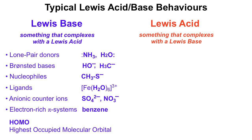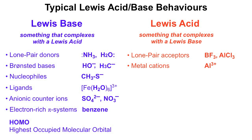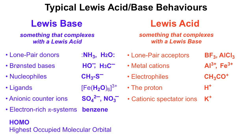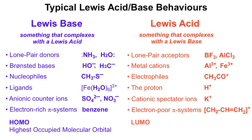Lewis acids can behave in various ways: as lone pair acceptors, for example boron trifluoride and aluminium chloride. Metal cations, for example the Al³⁺ ion and the Fe³⁺ ion. Electrophiles, for example the acyl cation, which reacts with benzene in the Friedel-Crafts reaction, making it a powerful electrophile and a Lewis acid. The proton H⁺ is a Lewis acid. Cationic spectator ions such as potassium are Lewis acids. Electron-poor pi systems are Lewis acids — for example, the allyl cation — which reacts via its LUMO, its lowest unoccupied molecular orbital.